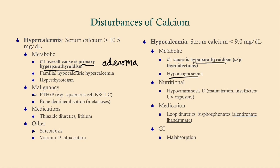Other causes of hypocalcemia include hypovitaminosis D — usually from malnutrition — and medications such as loop diuretics and bisphosphonates. Malabsorption is also a big one: think of celiac disease or Crohn's disease. Anything that impairs fat absorption impairs vitamin D absorption, and unabsorbed fat can also bind calcium directly, worsening the deficiency.